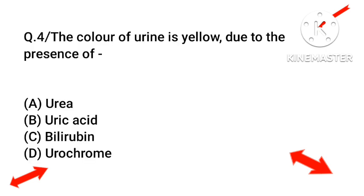Question number four: the color of urine is yellow due to the presence of what? The right answer will be urochrome, option number D.